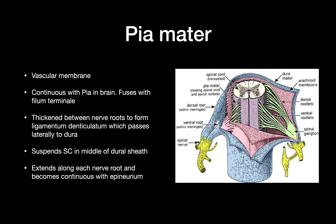The pia mater is a vascular membrane. It's continuous with the pia in the brain and fuses with the filum terminale. It's thickened between the nerve roots to form the ligamentum denticulatum, which passes laterally to the dura and suspends the spinal cord in the middle of the dural sheath. It extends along each nerve root and becomes continuous with the epineurium.